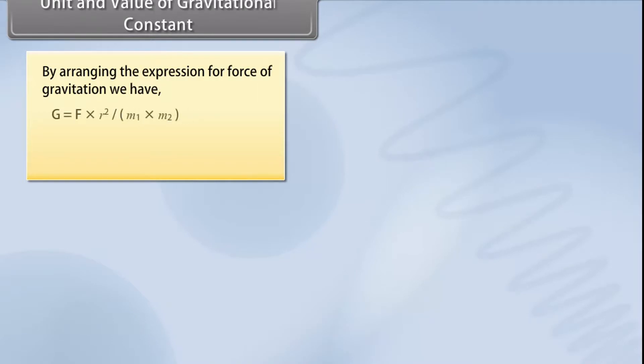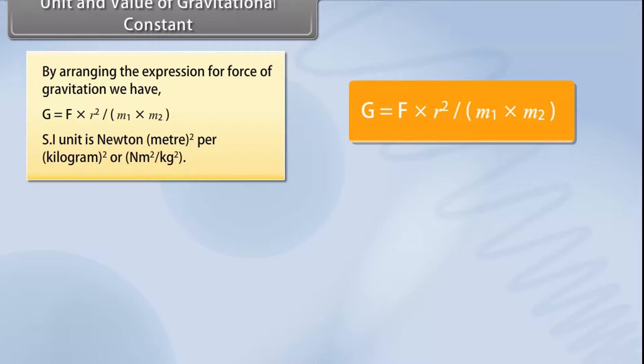Unit and Value of Gravitational Constant. By arranging the expression for force of gravitation we have G is equal to F into R square upon M1 into M2. SI unit is Newton meter squared per kilogram squared.